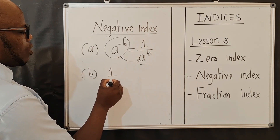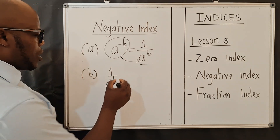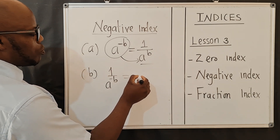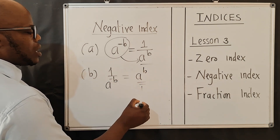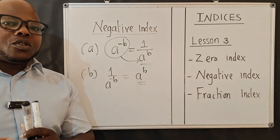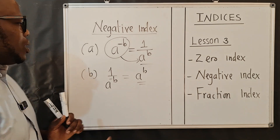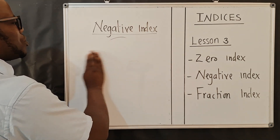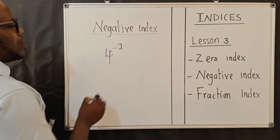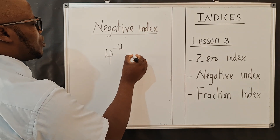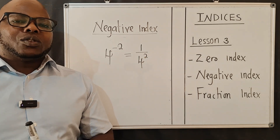What if you've got one over a to the power negative b? Do the same thing in reverse — it moves up, so it becomes a to the power b, and you're left with one in the denominator which doesn't change anything, so the result is just a to the power b. For a numerical example: four to the power negative two equals one over four squared. That's how you work out the negative index.